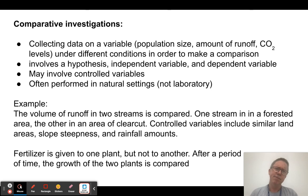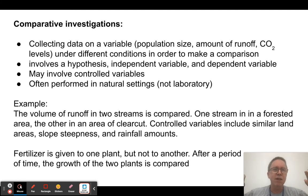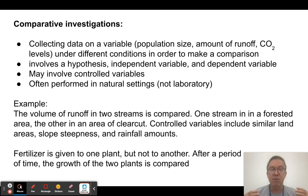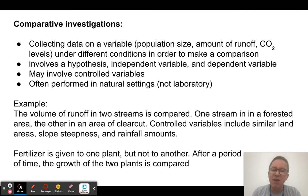In a comparative investigation, we're collecting data about a population or some variable — the population of an organism, the amount of runoff, how much CO2 is in the atmosphere — under different conditions in order to make a comparison. This does usually involve a hypothesis. It may or may not involve controlled variables, and it is often performed in nature rather than in a laboratory. That's very useful in environmental science because when I do things in a laboratory, I've isolated so many variables it no longer really reflects the natural environment, but if I go out into nature I can get a more realistic view of what's going to happen.